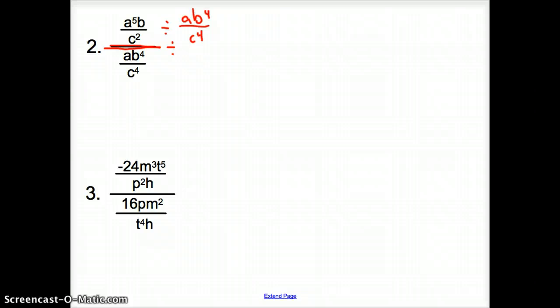What does division mean? Well, I'm going to go over here, and it's going to be a to the fifth, b, over c squared. Division means with fractions to flip and multiply, so it's going to be c to the fourth, over a, b to the fourth.